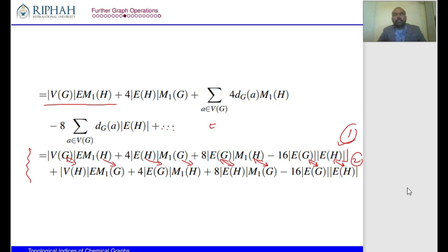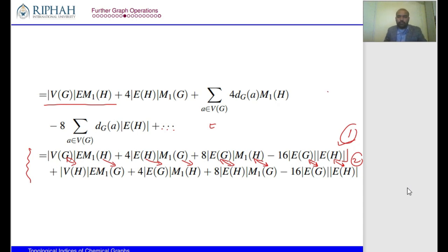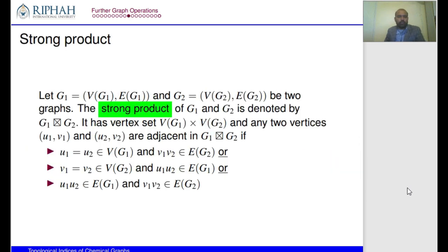The main steps are: first, divide the summation by edge type; second, apply the degree formula; third, perform careful computation. There are three steps to follow, but your calculation must be very careful. This was the first graph operation discussed. Now we move to another: the strong product, which is very similar to the Cartesian product.